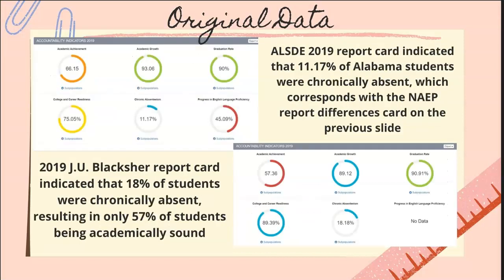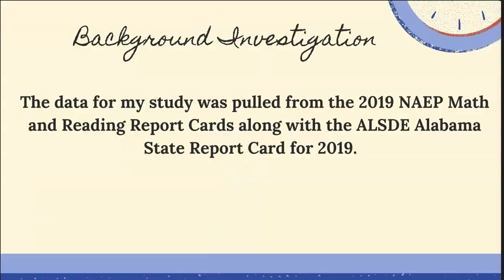The next slide of original data on the left side of your screen is the State Department's 2019 report card for the entire state of Alabama. It indicated that 11.17% of Alabama students were chronically absent, which corresponds with the NAEP report card. This indicated that 18% of students were chronically absent, which resulted in only 57% of our students being academically sound.